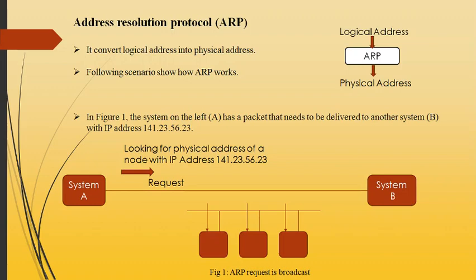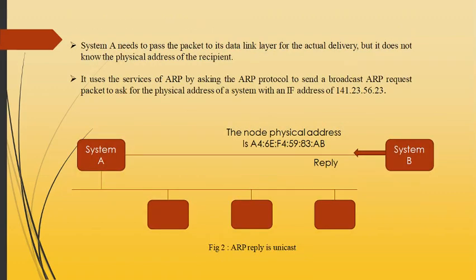Now we see what is Address Resolution Protocol, that is ARP. ARP converts the logical address into the physical address. Address resolution is required because at the hardware level, computers identify each other based on the physical address hard-coded on their network interface card. Figure 1 shows the system on the left, A, which has a packet that needs to be delivered to another system B with IP address 141.23.56.23. System A needs to pass the packet to its data link layer for actual delivery, but it does not know the physical address. It uses the service of ARP by asking the ARP protocol to send a broadcast ARP request packet to ask for the physical address of the system with the IP address 141.23.56.23, as shown in the figure.